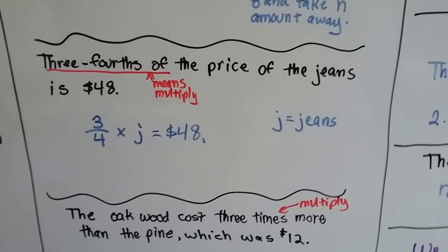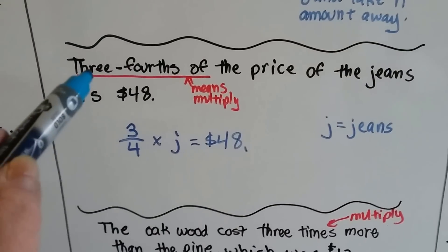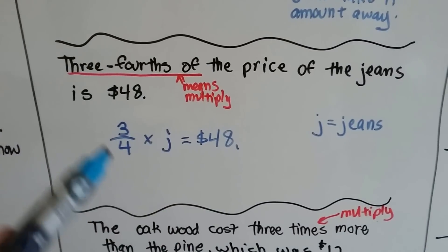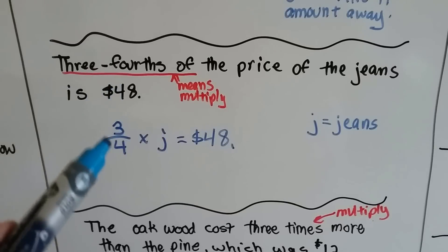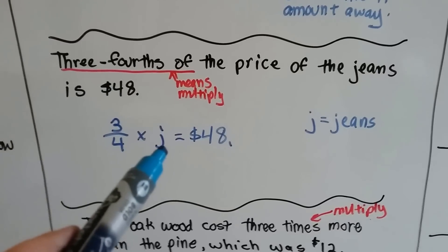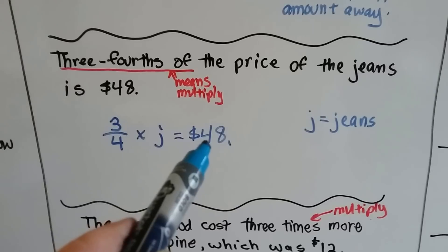3⁄4 of the price of the jeans is $48. Well, when we ever see a fraction of, that means we need to multiply to find it. So, if 3⁄4 of the price of the jeans is $48, then 3⁄4 times J, the jeans, is $48.